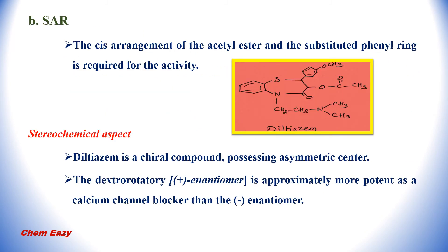In the SAR of diltiazem, the cis arrangement of the acetyl ester and the substituted phenyl ring is required for activity. In the stereochemical aspect, diltiazem is a chiral compound possessing an asymmetric center. The dextrorotatory enantiomer of diltiazem is approximately more potent as a calcium channel blocker than the levorotatory enantiomer.